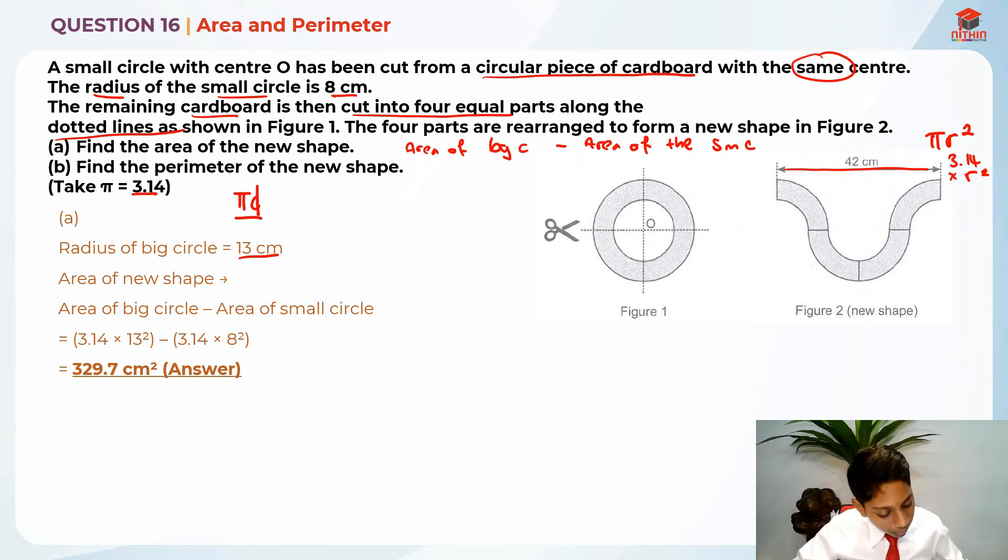So we need to find the perimeter, which is basically one small arc, two small arc, three small arc, four small arcs, because this small arc is equal to this small arc over here. And then one big arc, two big arcs, three big arcs, and four big arcs.